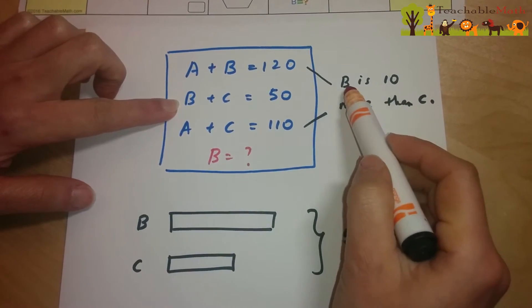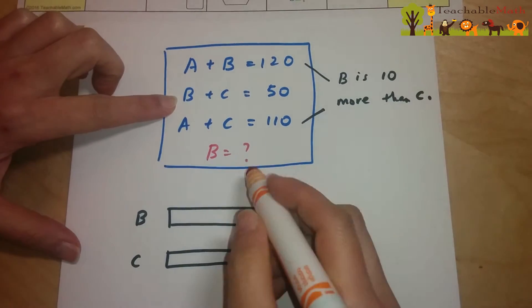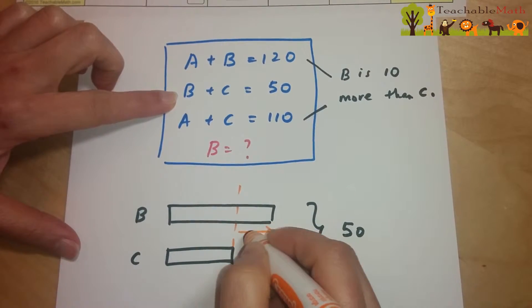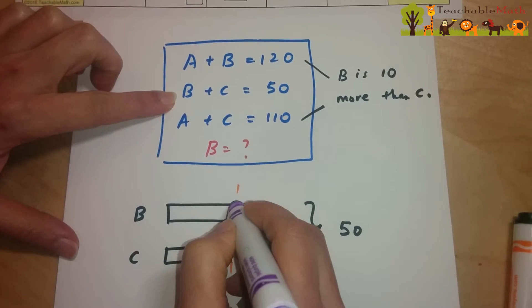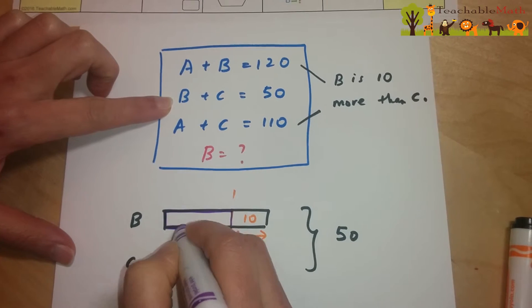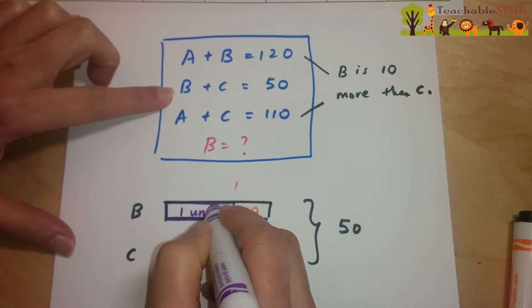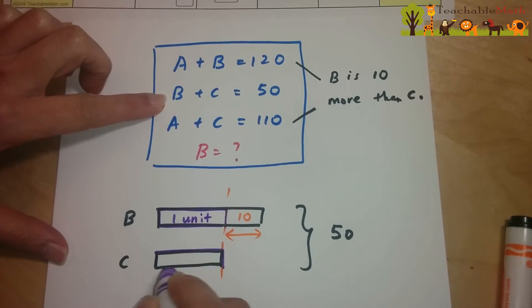We know that B is 10 more than C. So we can say that this is one unit. This is also one unit.